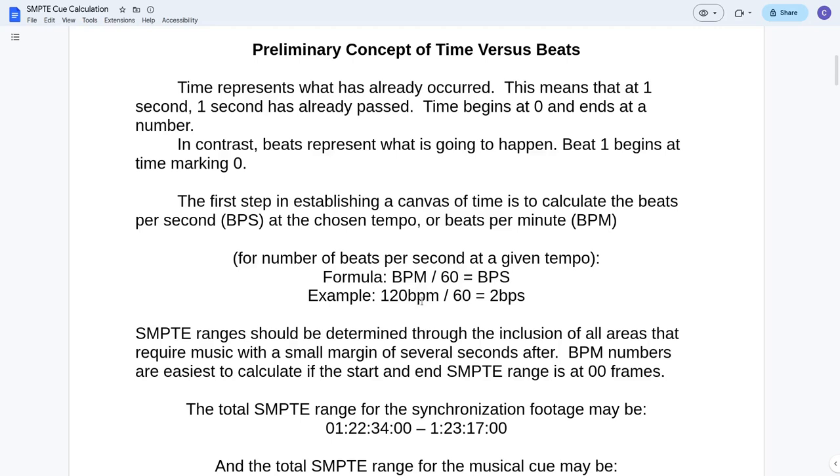Example, 120 beats per minute, which is twice 60, equals 2 beats per second. You kind of already intuitively know that. But that's the formula in action. You can do this with any beats per minute to get the total beats per second.